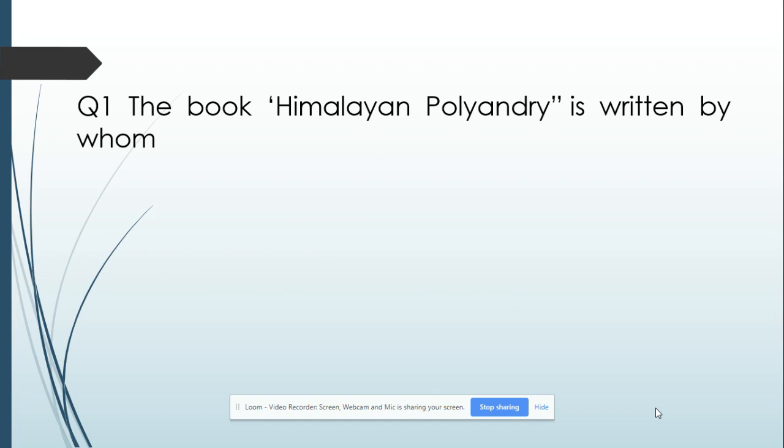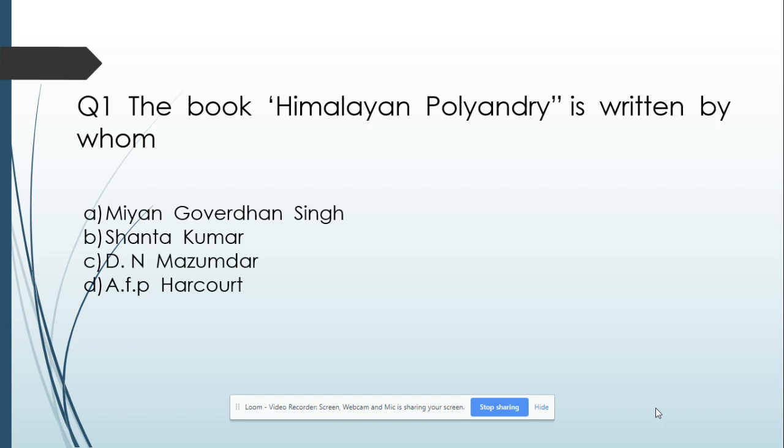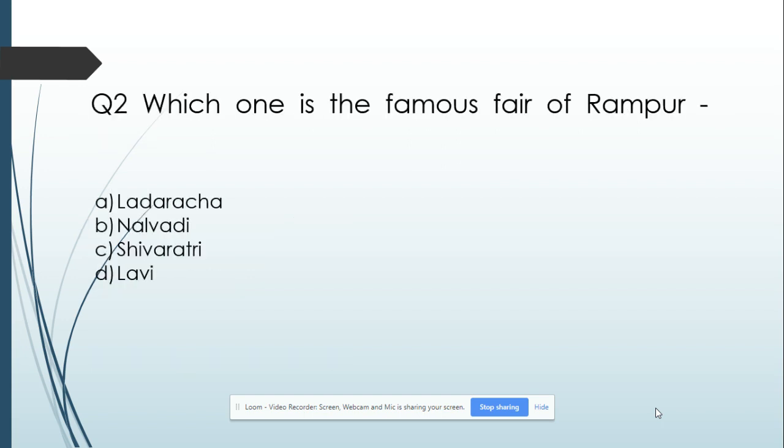Question number 1: The book 'Himalayan Polyandry' is written by whom? Option A: Miyan Govardhan Singh. Option B: Shanta Kumar. Option C: D.N. Majumdar. Option D: A.F.P. Harcourt. And its answer is D.N. Majumdar.